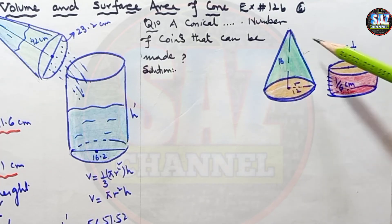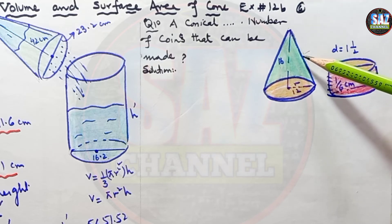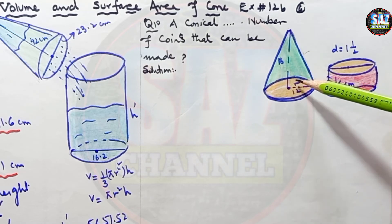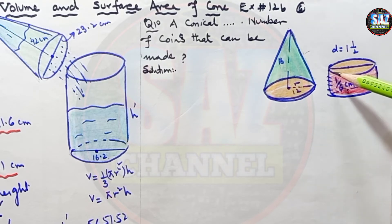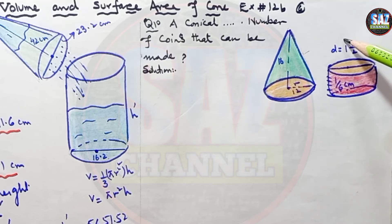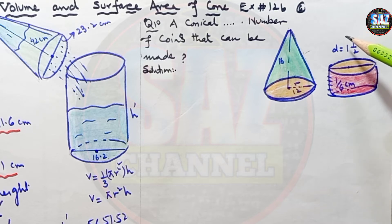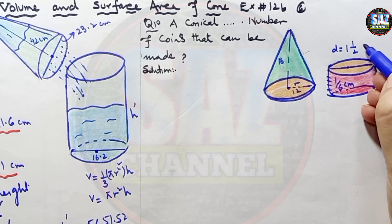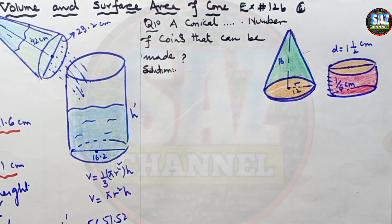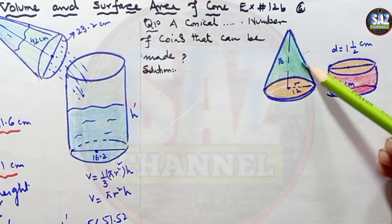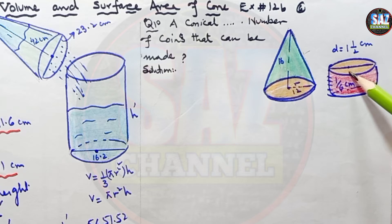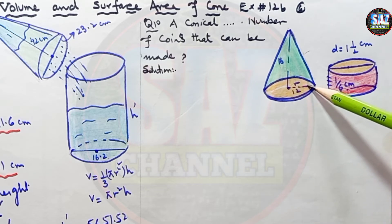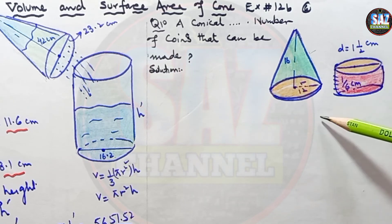We have a conical block of silver — a block in the form of a cone — with height 16 cm and radius 12 cm. We are melting this cone and reshaping it into coins, each with thickness 1/6 cm and diameter 1.5 cm. We have to find how many coins we can make. To find the number of coins, we find the volume of the cone, the volume of one coin, and then divide: number of coins = volume of cone ÷ volume of coin.